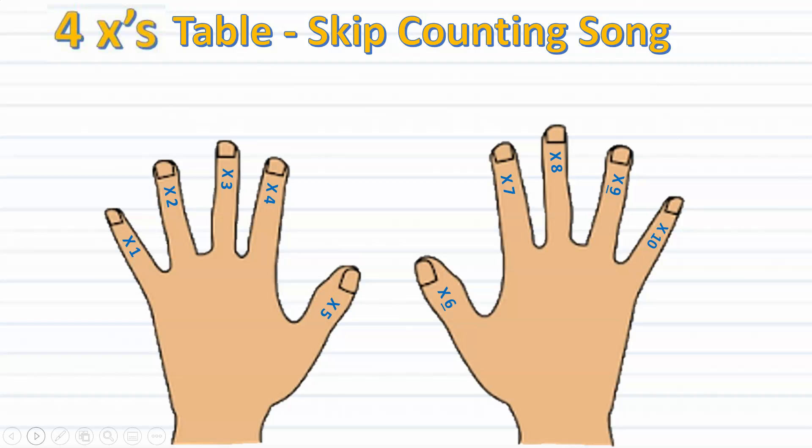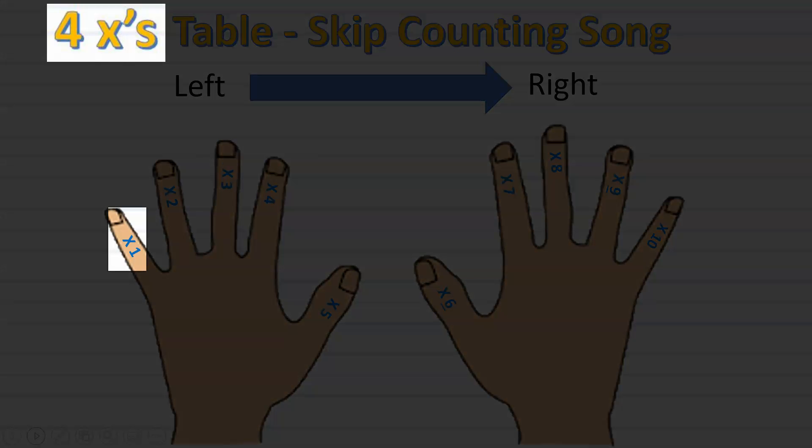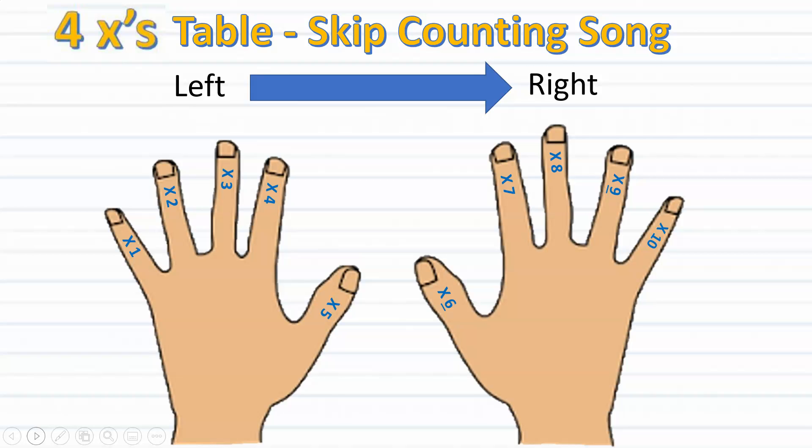We will assign each finger a number counting from left to right. As we can see in this picture, the pinky on the left is one, ring finger two, middle finger three, pointer finger four, thumb five, thumb on the right six, followed by seven, eight, nine, and ten. Keep in mind that since this skip counting song focuses on factors one through nine only, we won't be using the tenth pinky finger.